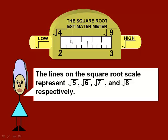So each line would represent a different square root. So the first line would be the square root of 5, square root of 6, square root of 7, and the square root of 8 respectively. It should be noted that this is not a precise scale and will only give estimated values, which is what we're doing.